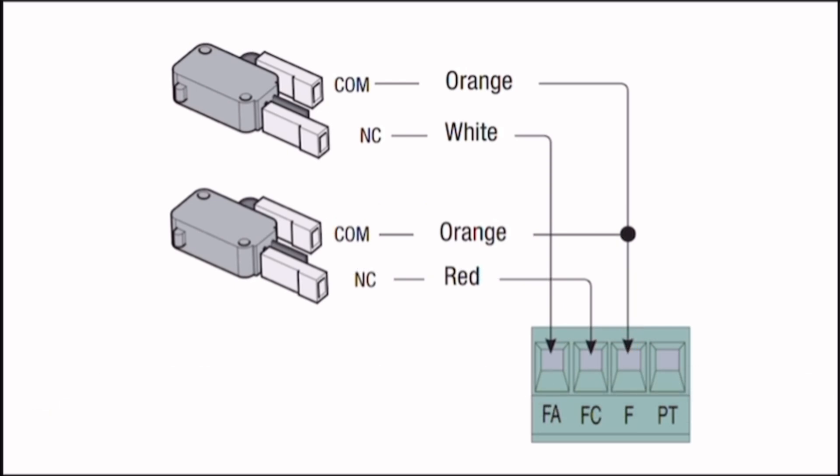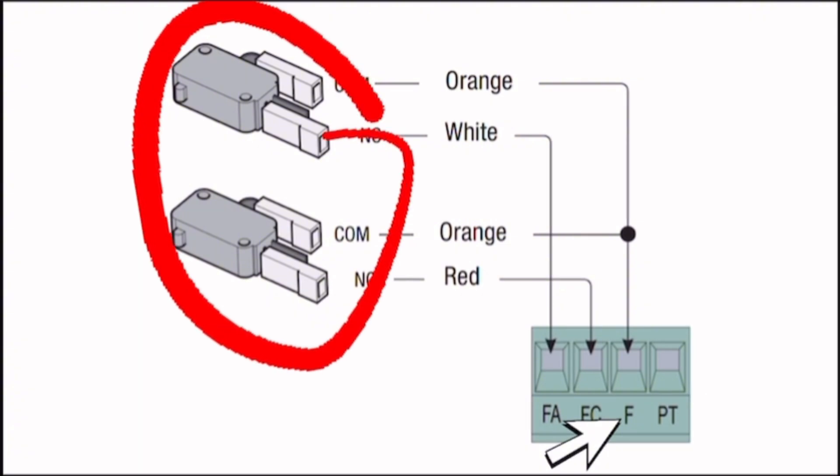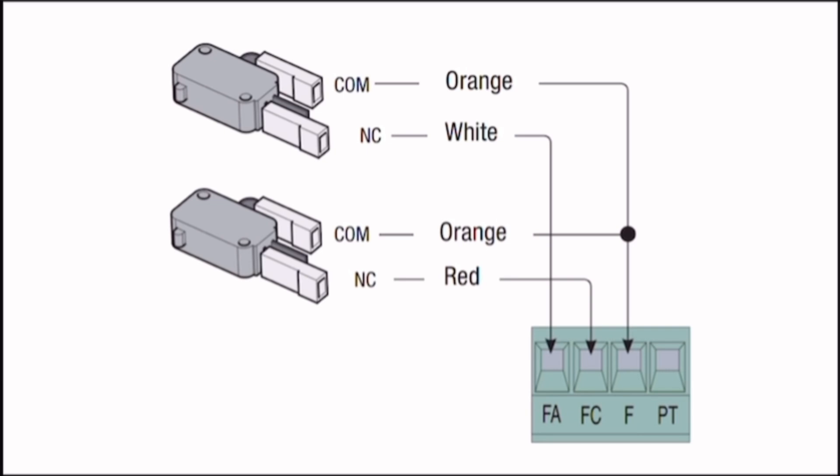Connection Design: The F terminal serves as a common point for both limit switches. The F.A. and F.C. terminals receive signals from the respective NC terminals of the switches, indicating the gate door's open or closed state.